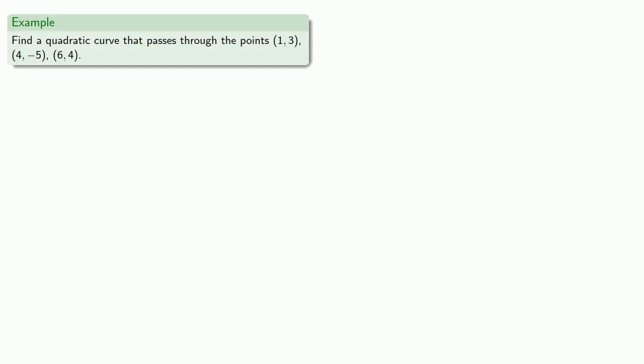So let's say we want to find a quadratic curve that passes through three given points. So our curve has equation f(x) equals a0 + a1*x + a2*x^2, where our unknowns are the coefficients a0, a1, a2.